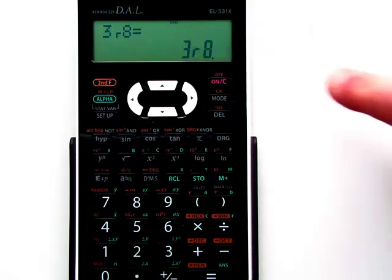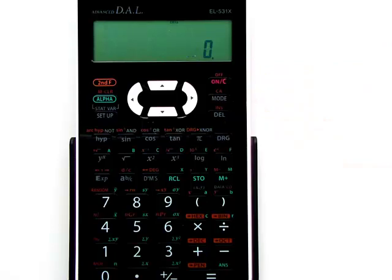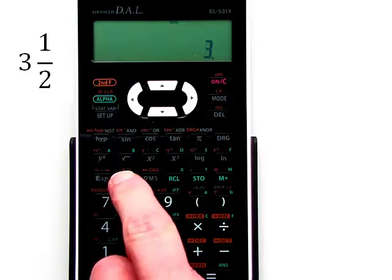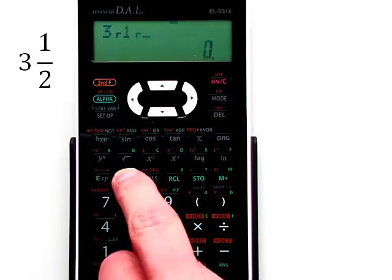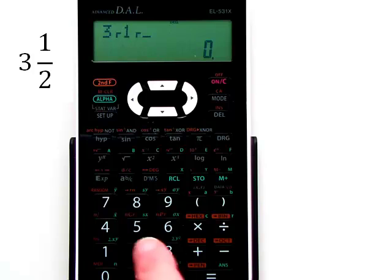Let's look at a mixed number now: 3 and 1/2. First, enter the whole number 3, then the fraction key, then the numerator 1, the fraction key again, followed by the denominator 2.